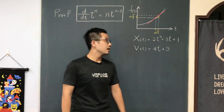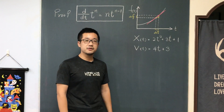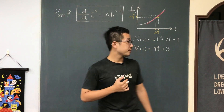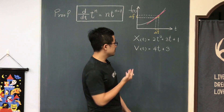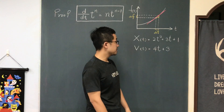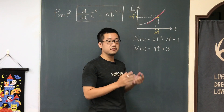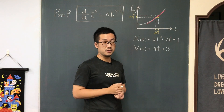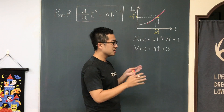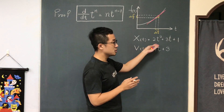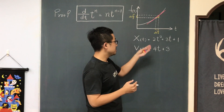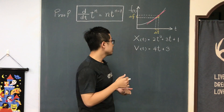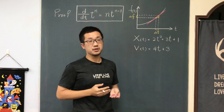Hello everyone, this is Nash. In a physics class we might usually have a function, for example the x of t — the position as a function of time. For example, this might be 2t² + 3t + 1. This is the position as a function of time. Simply by looking at x(t), it is just too complicated for us to understand what kind of motion it is, because it's changing its position at different times.